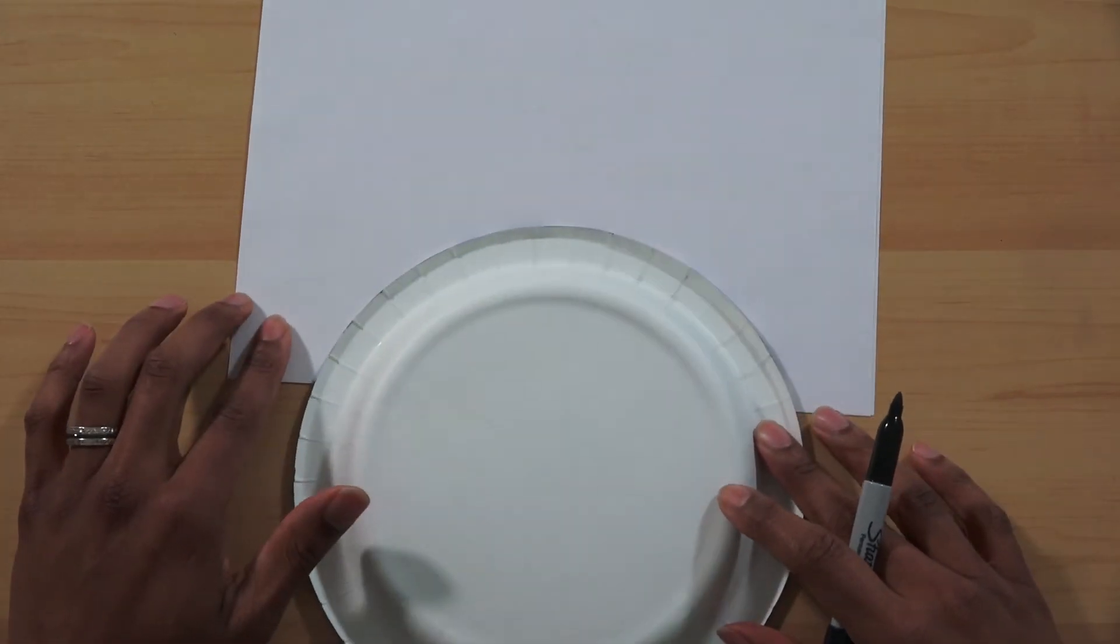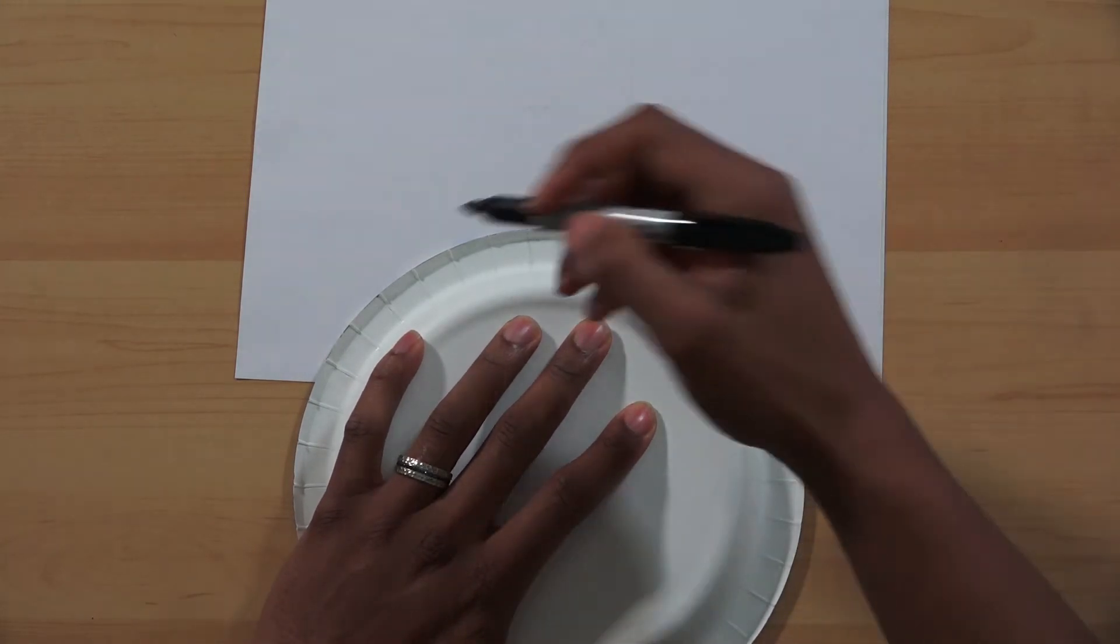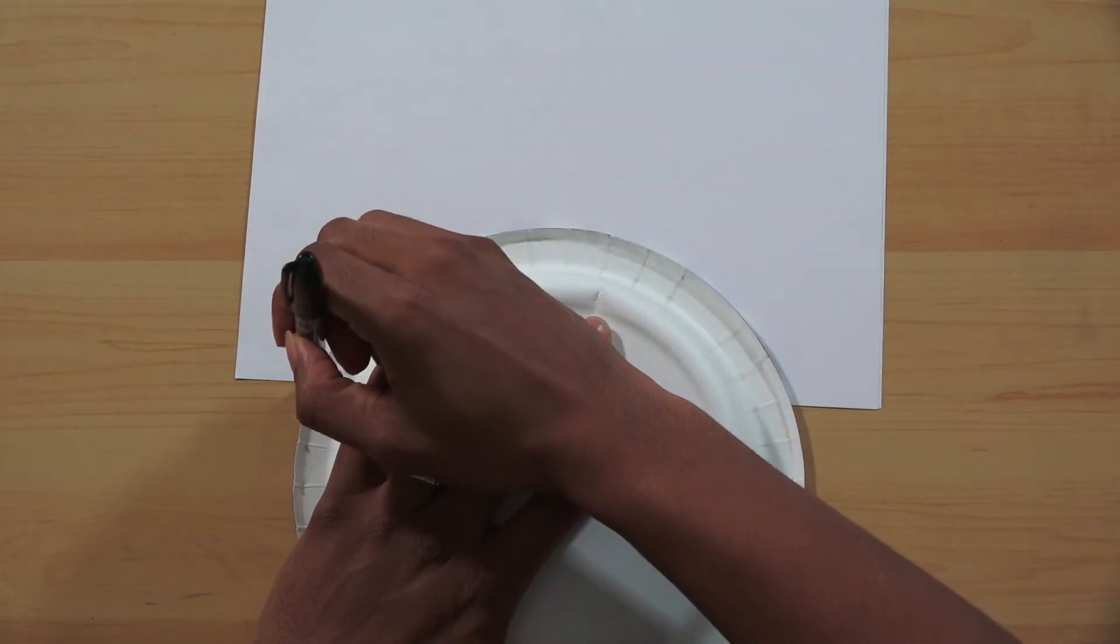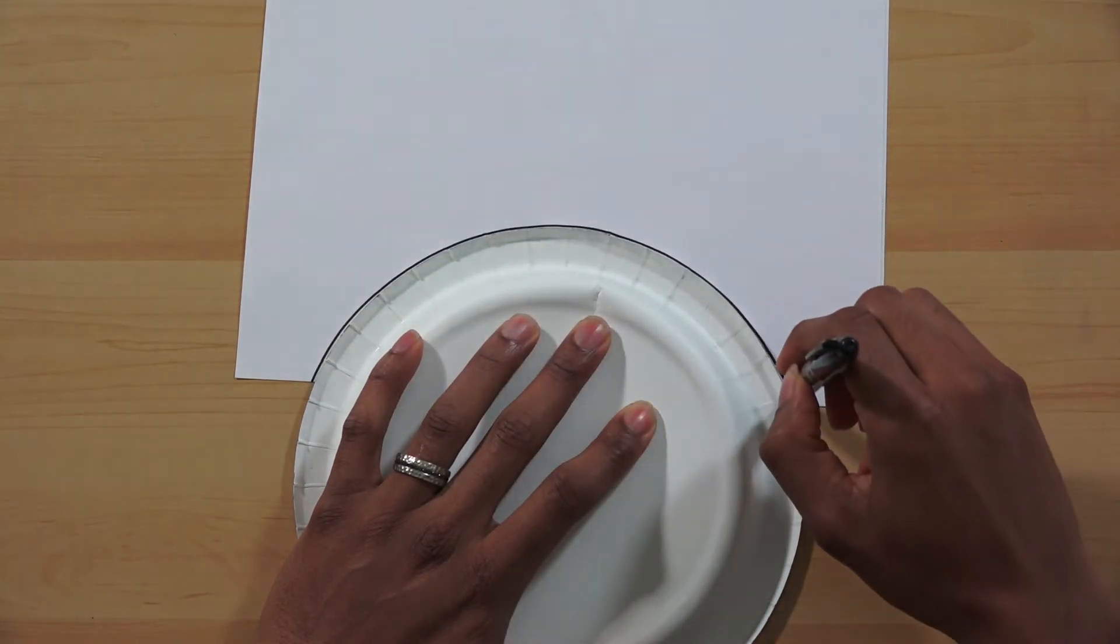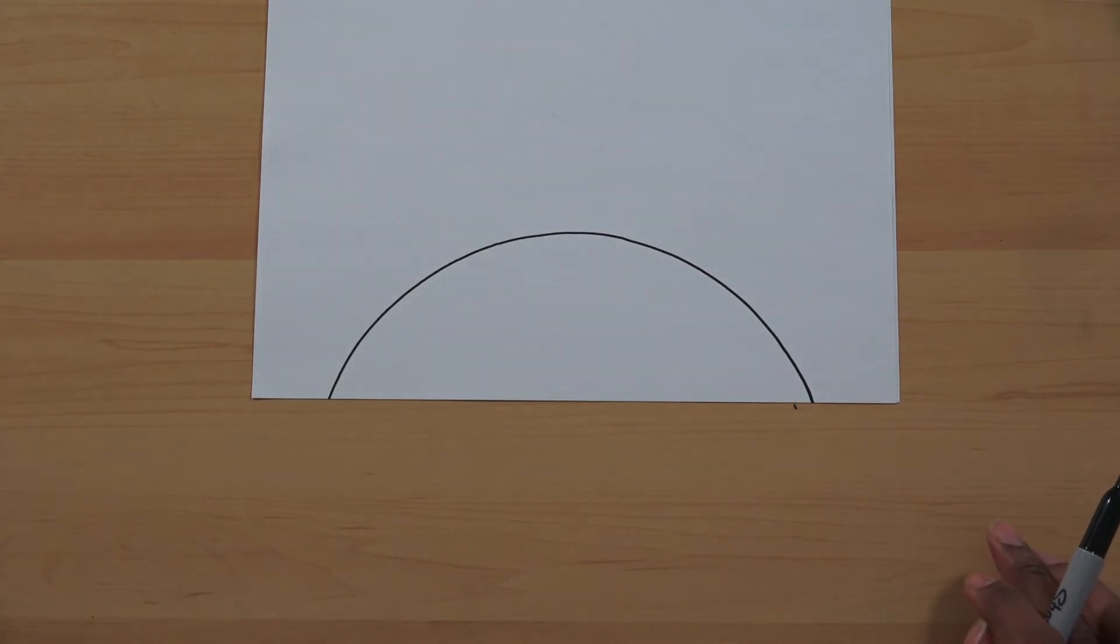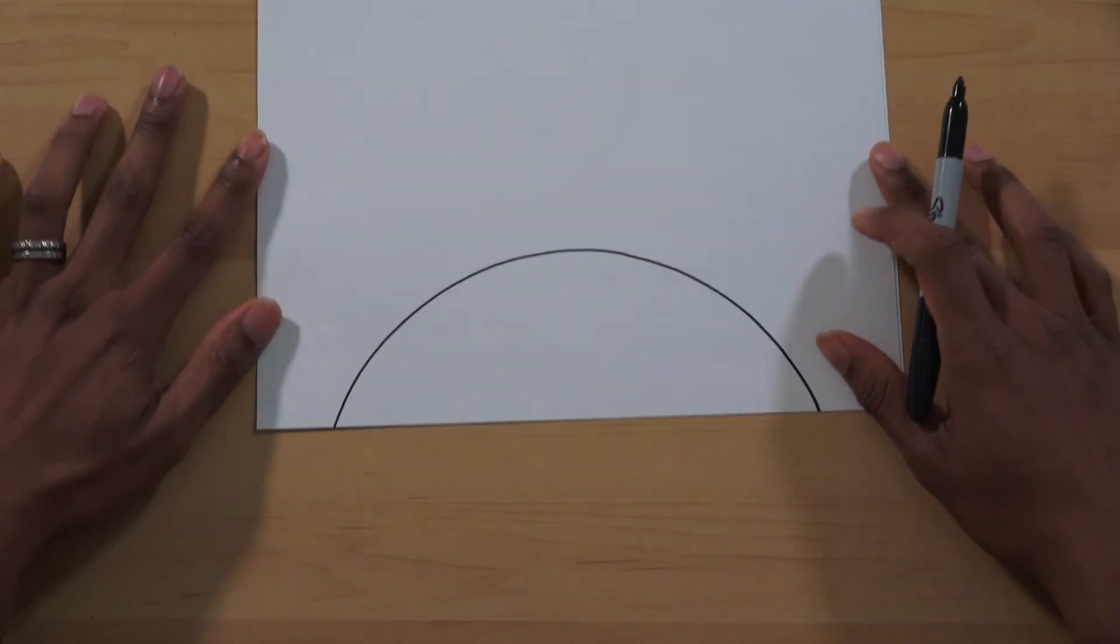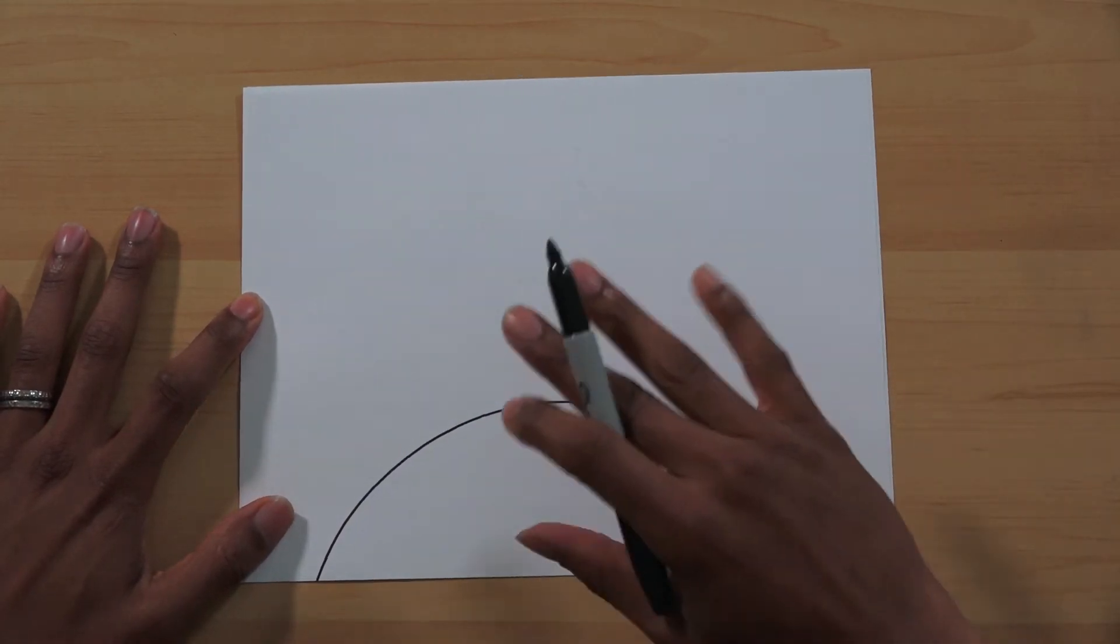You're going to hold that round flat object down. You're going to take your marker and trace. Do whatever feels comfortable for you. Take it off and put it over to the side. And just like that, we just drew the world.